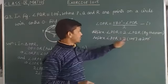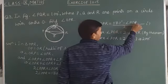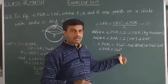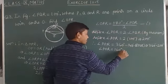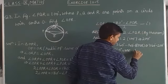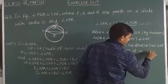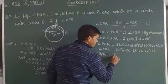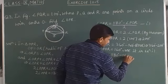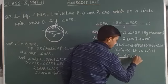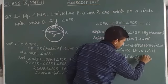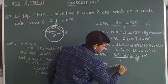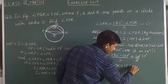Since reflex angle POR is 200°, angle POR equals 360° minus 200°, which is 160°. Using angle POR equals 160° in equation one, angle OPR equals (180° minus 160°) divided by 2, which is 20 divided by 2, so angle OPR equals 10°. That is the required answer.